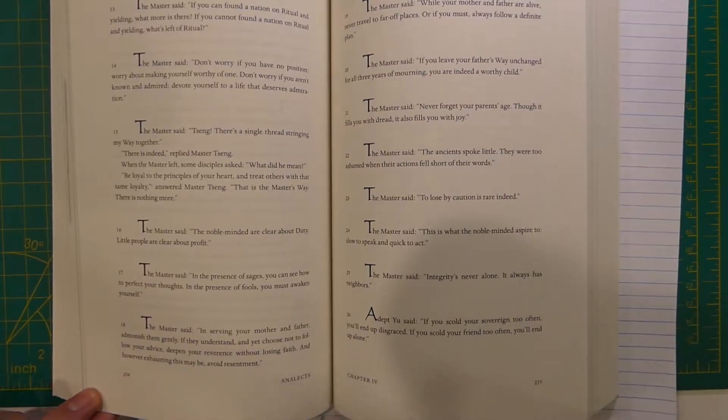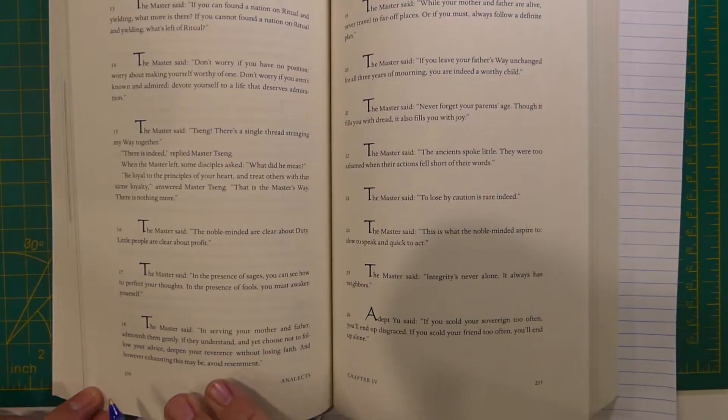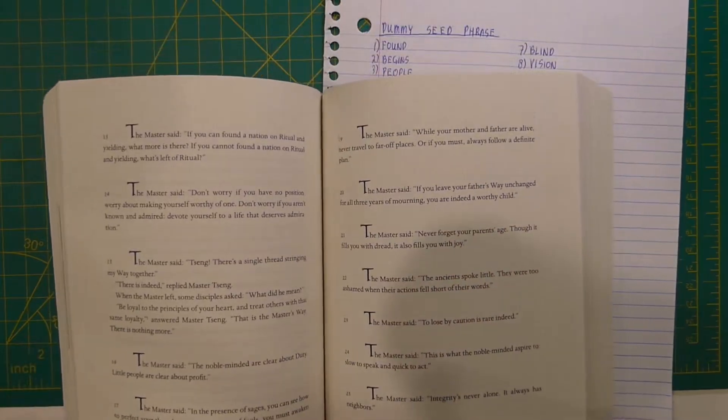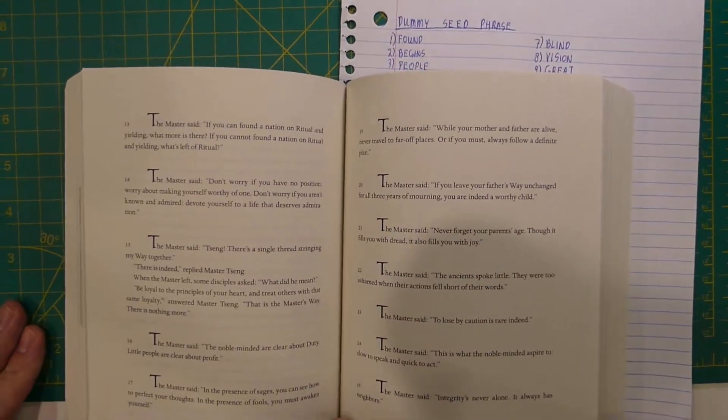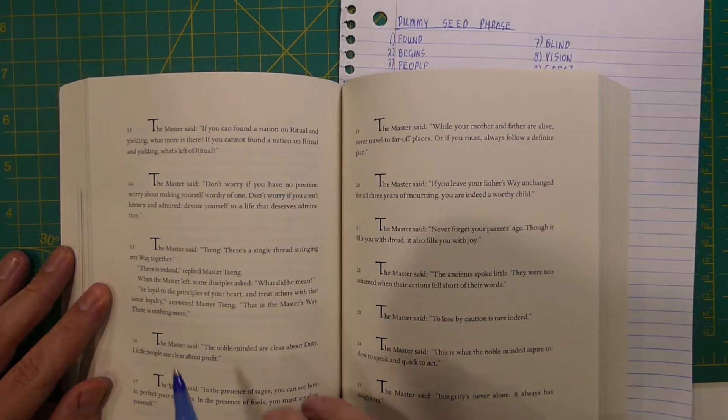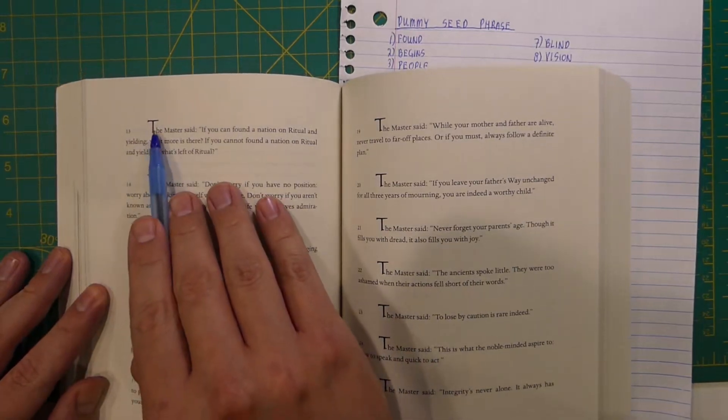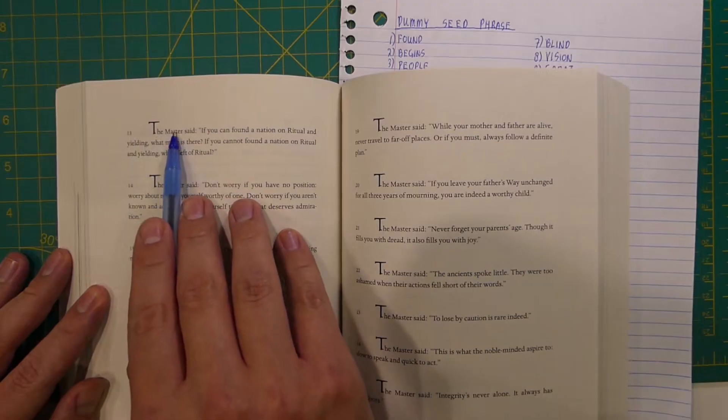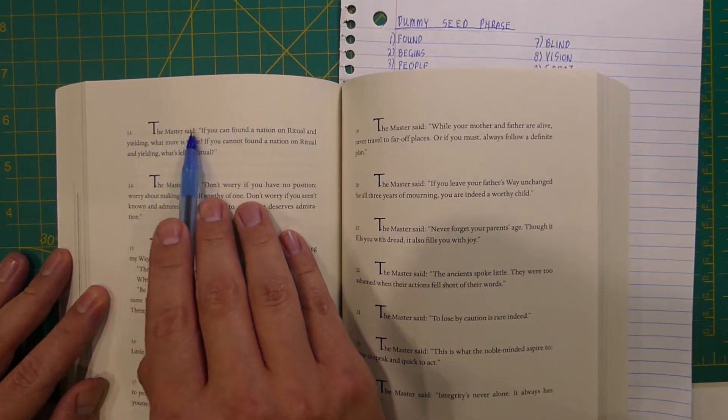And I'm on random page 254. In 254, I scan for the word 'found'. I found it. I found the word 'found' in line one, word one, two, three, four, five, six, seven.